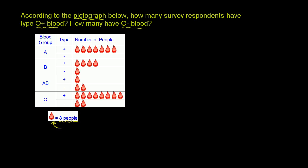But let's answer the actual question that they're asking us. How many survey respondents have type O positive? So this is O, and then we care about O positive. So we have one blood drop, two, three. Let me do this in a different color.